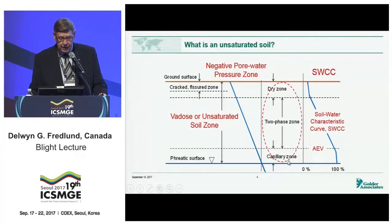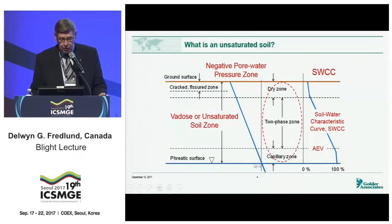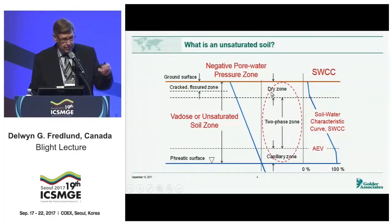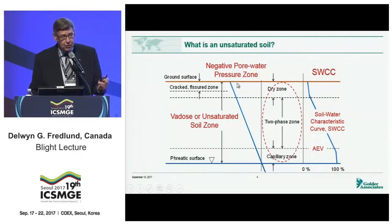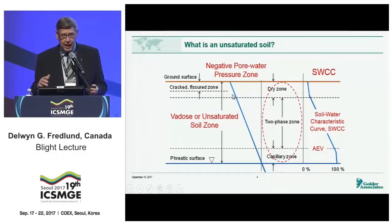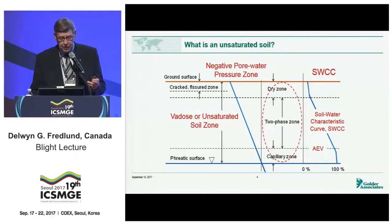Immediately above the phreatic surface is the capillary zone, where the water phase is continuous but the air phase is not. Above that is the two-phase zone, where both the air phase and the water phase are continuous. And above that, if the zone is large enough, we could have a dry zone. Under an equilibrium condition with zero flux across the ground surface, this will be the state of stress in the water phase, regardless of whether the soil is a sand, a silt, or a clay.